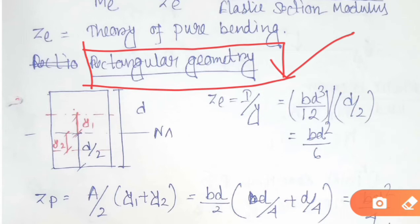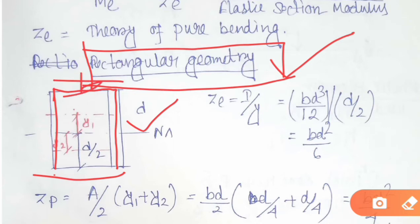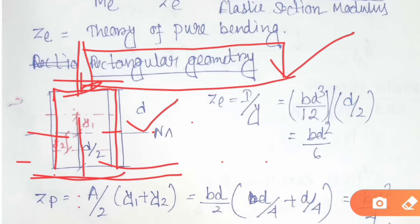Here I am taking rectangular geometry, so we will find out the value of shape factor. We have taken a beam, a rectangular section, whose depth is D and width is B. The neutral axis is parallel to its width. If the neutral axis were oriented the other way, it would be parallel to its depth.